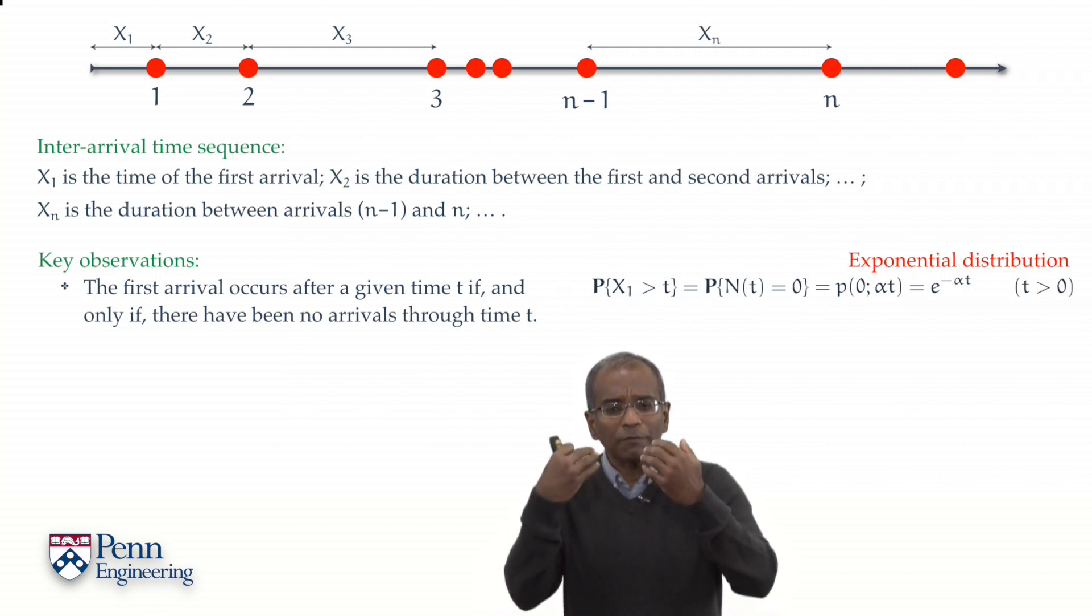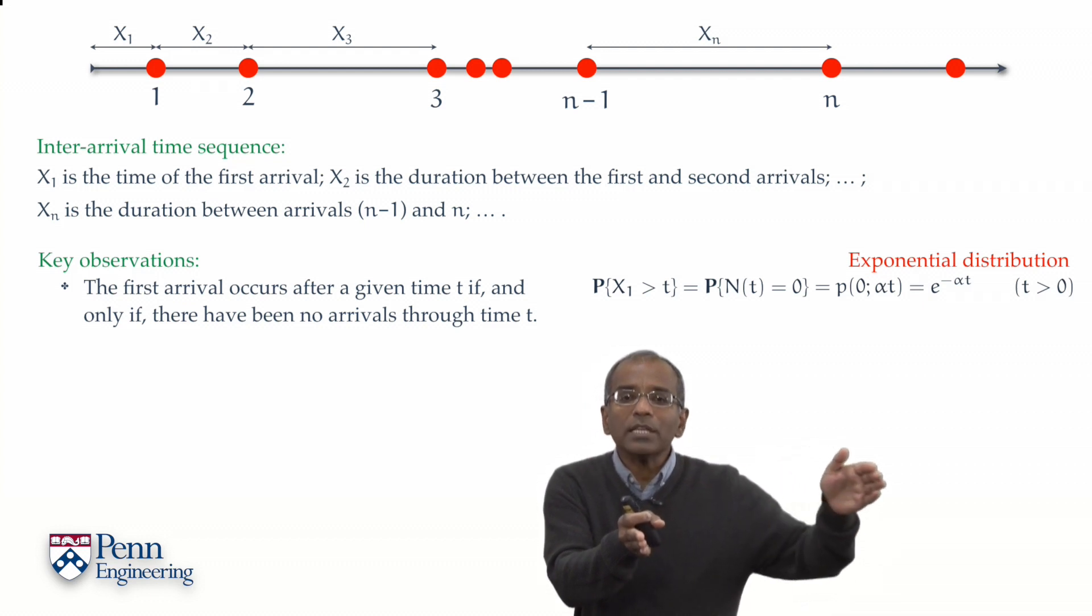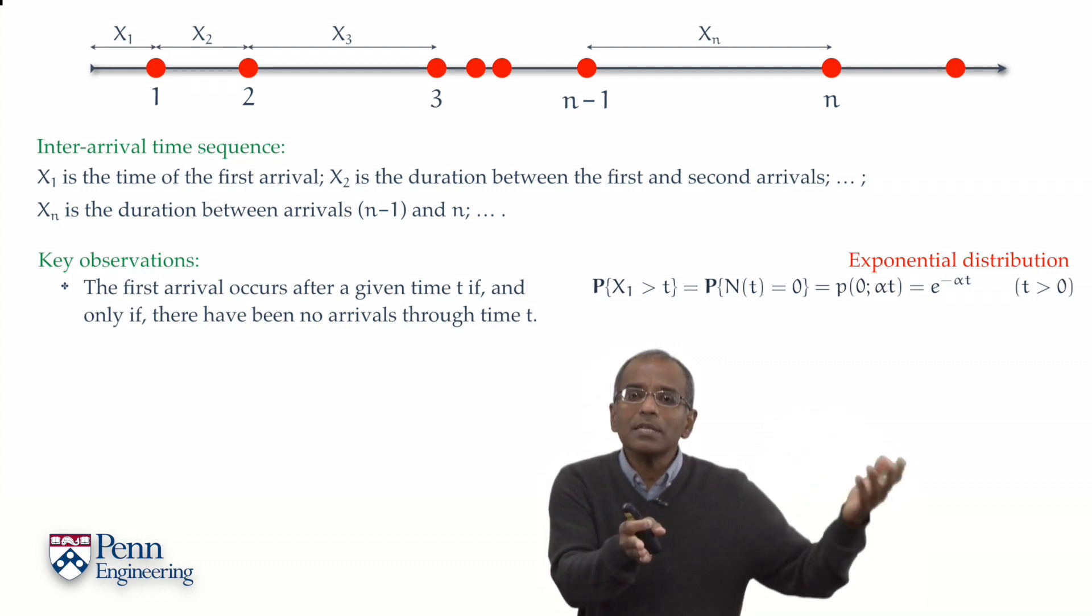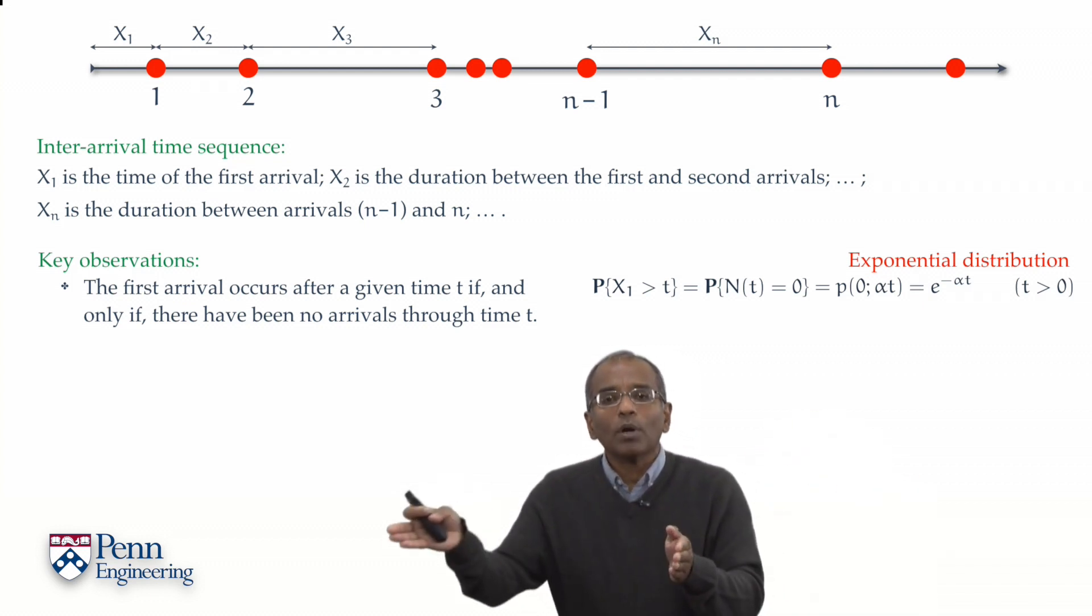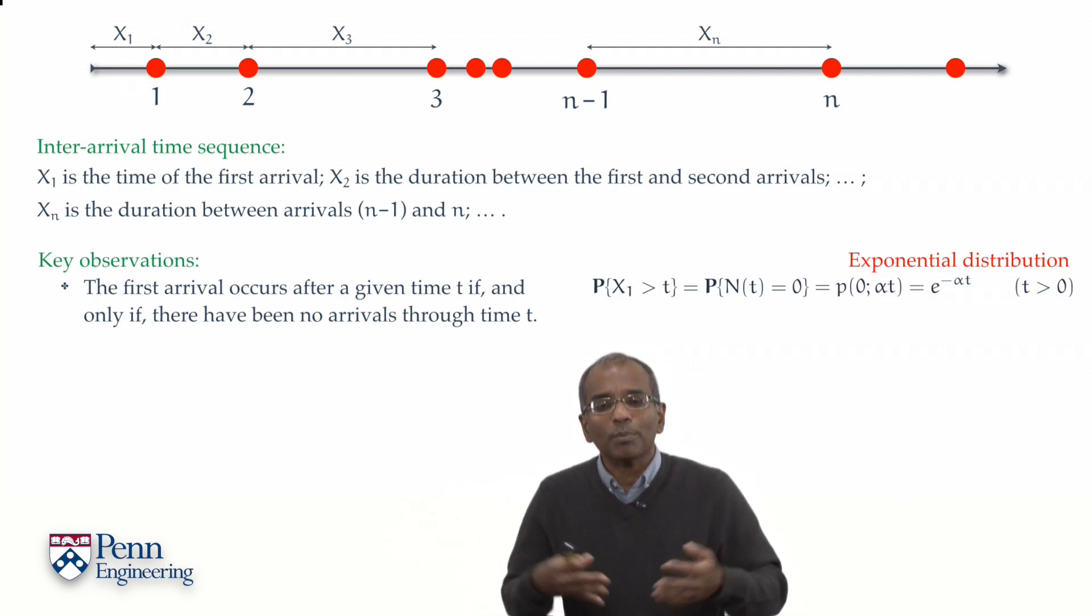And therefore, the moment we look at the first arrival, from that point on, given that the first arrival has occurred somewhere, the time to the next arrival is independent of what transpired earlier. This is the independent increment property.